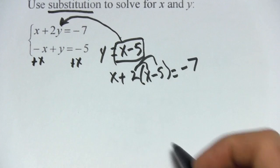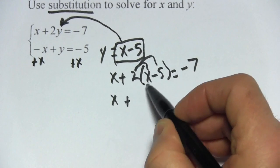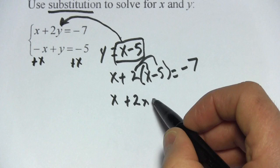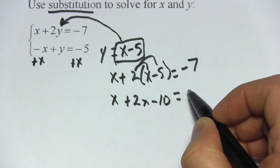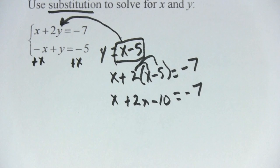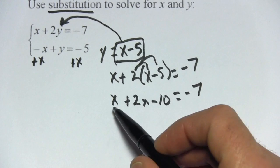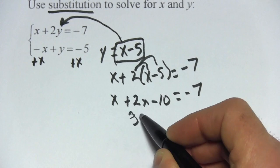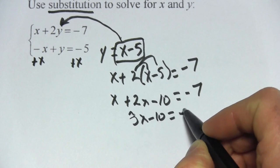Let's go ahead and distribute the 2. So that would give us x plus 2 times x is 2x, 2 times negative 5 is minus 10, equals a negative 7. x plus 2x is 3x, minus 10 equals negative 7.